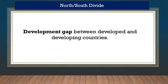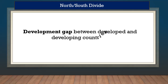The North and South divide: the North refers to the developed countries, and the South refers to the developing countries. So the North and South divide refers to the developmental gap between the developed countries, which is the North, and the developing countries, which is the South. That is what the development gap, or the North and South divide, is.